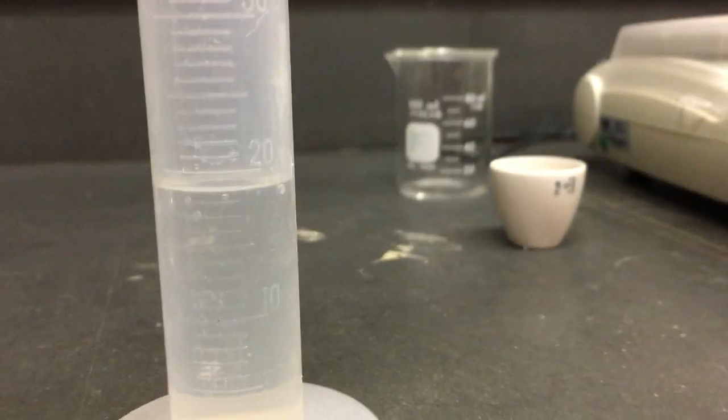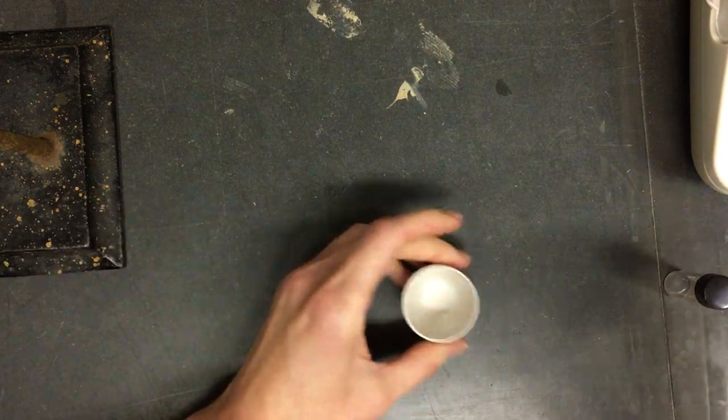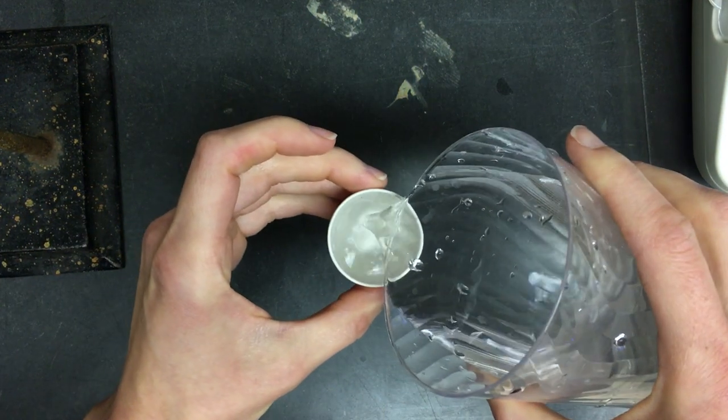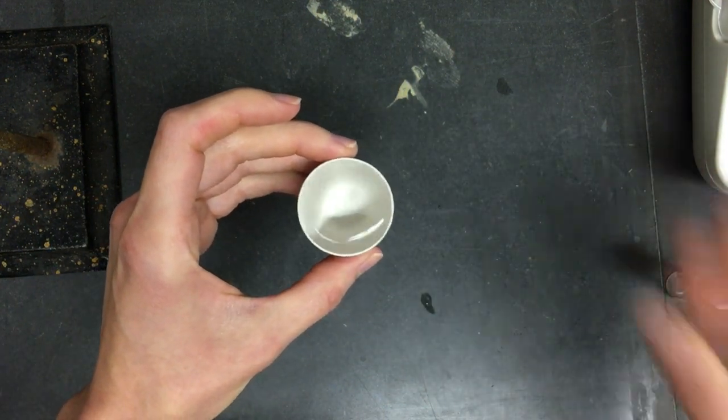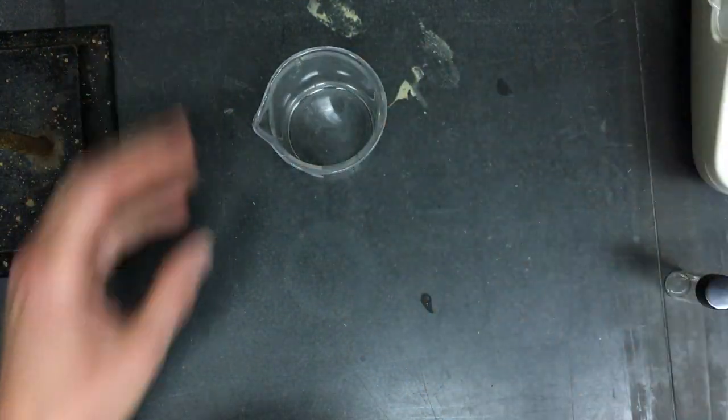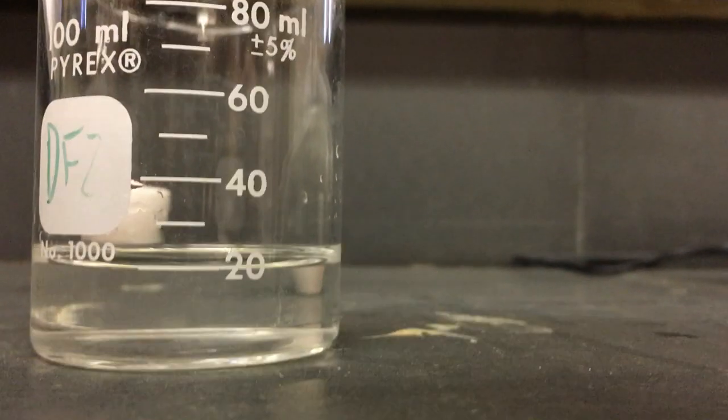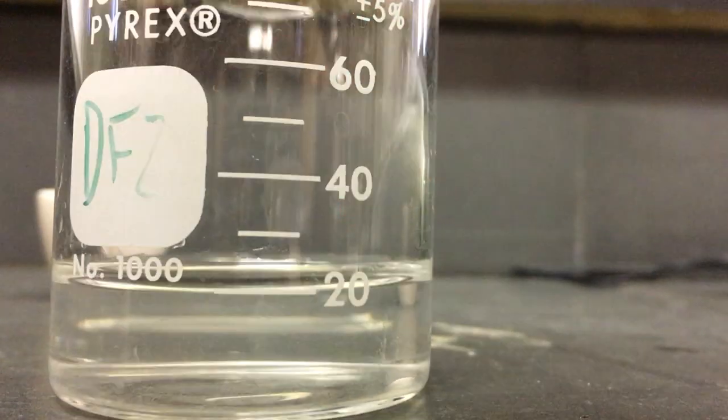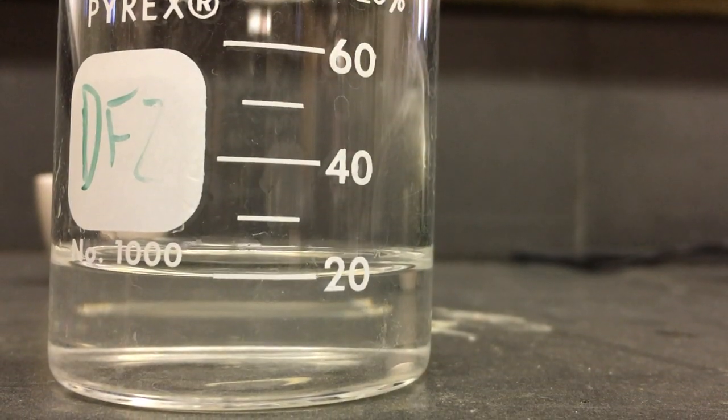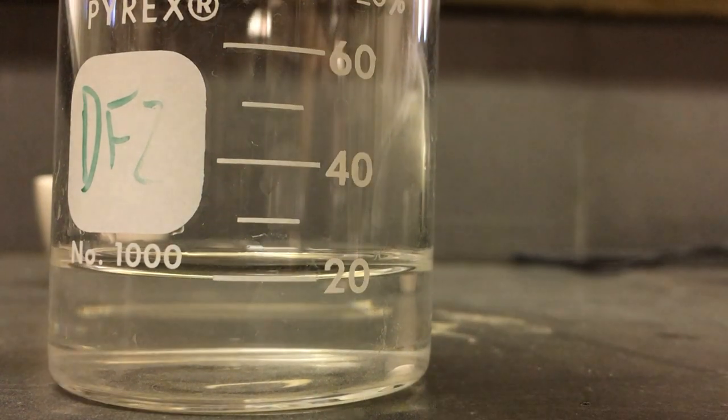Okay, now we're going to measure that same crucible, but this time with the beaker. So again, I'm going to fill up the crucible. I'll bring my phone down here so you can read the volume. So there is the beaker. Record that using the correct number of significant figures.